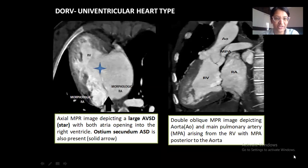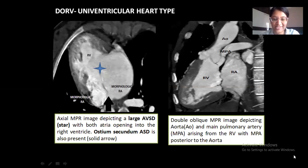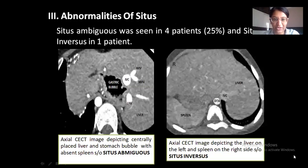Coming to the univentricular heart type of DORV: the first image is an axial MPR image depicting a large atrioventricular septal defect with both atria opening into the right ventricle and showing right atrial morphology; ostium secundum ASD is also present, depicted by the solid arrow. The second image is an oblique MPR image depicting the aorta and the main pulmonary artery arising from the right ventricle, with the MPA present posterior to the aorta.